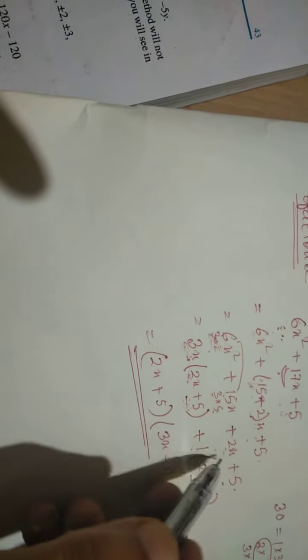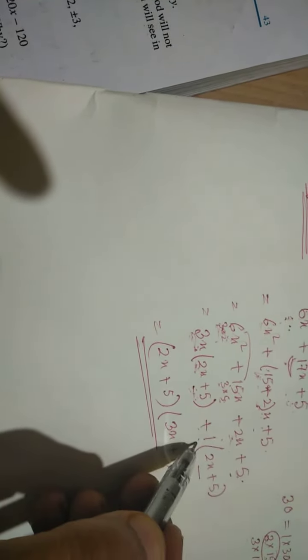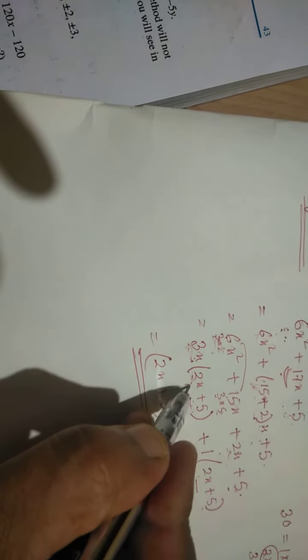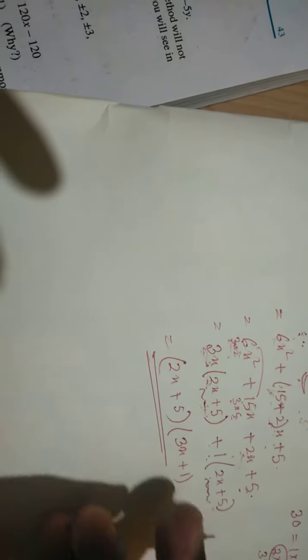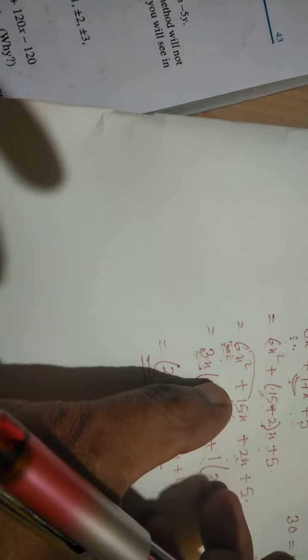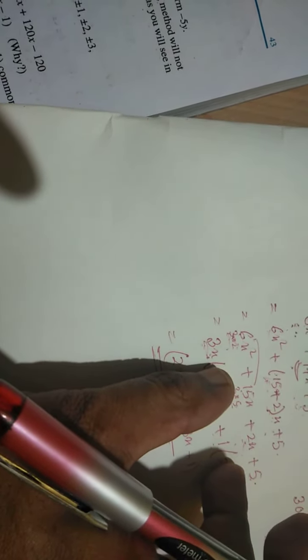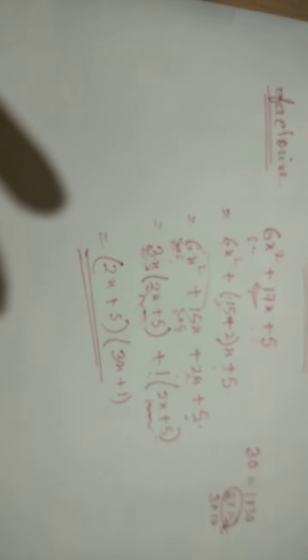Will get 5 plus... What is common here? 1 is common. 2x plus 5. So here 2x plus 5, here also 2x plus 5. These two are common. Then what's left? After that, these two common, what's left? 3x plus 1. So this is another sum.